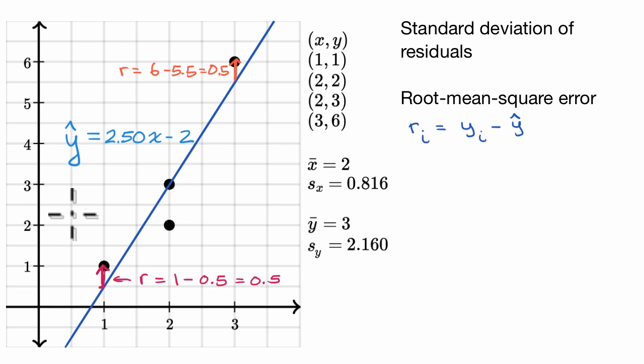For this point that sits right on the model, the actual is the predicted. When x is two, the actual is three, and what was predicted by the model is three. So the residual here is equal to zero.